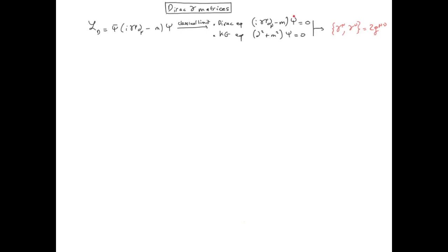But we also want the field psi to obey the Klein-Gordon equation. And for that to happen in the classical limit, we need a condition on gamma, which is such that the anticommutators of gamma is equal to two times the metric.